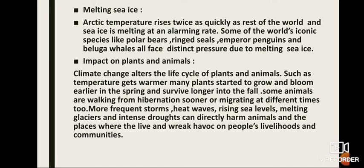Impact of climatic changes on plants and animals: climate change alters the life cycle of plants and animals. As temperatures get warmer, many plants start to grow and bloom earlier in spring and survive longer into fall. Some animals are waking from hibernation sooner or migrating at different times. More frequent storms, heat waves, rising sea levels, melting glaciers, and intense droughts can directly harm animals and the places where they live, wreaking havoc on people's livelihoods and communities.